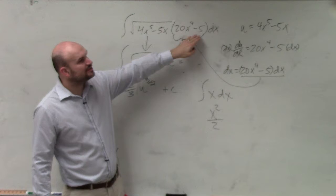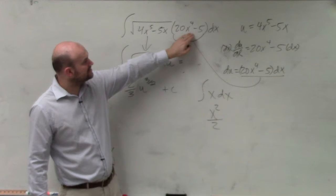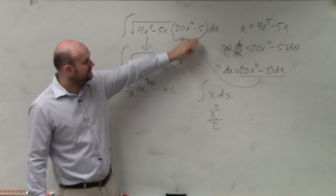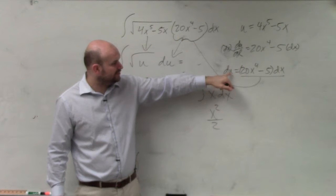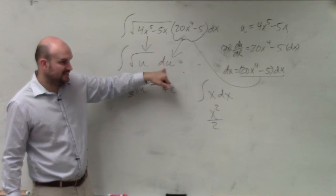You're not integrating the 20x to the 4, though. What I'm saying is this 20x to the 4 minus 5 dx is equal to du. So I replace it with du.